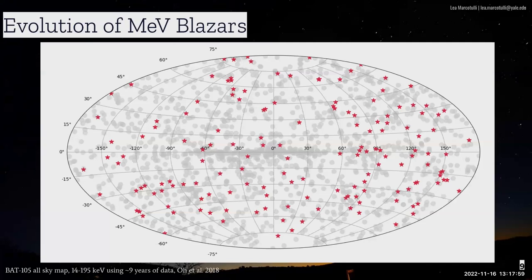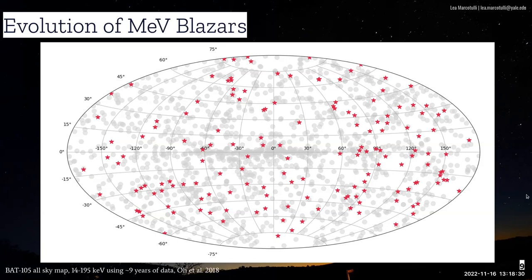To study how MeV blazars evolve, I constructed a luminosity function — the number of sources per luminosity bin per comoving volume — using the Swift-BAT all-sky survey, specifically the BAT 105-month catalog covering 14 to 195 keV. I cross-matched it with several blazar catalogs to define a clean sample. Blazars make up only about 10% of the total sources detected by BAT, but with redshifts up to 4.6 for the highest-redshift one, there are enough to study their evolution.